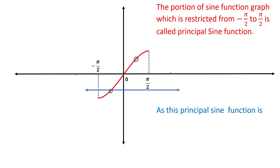So its inverse exists, because we know that the inverse of a bijective function exists. As this principal sine function is bijective, its inverse exists. This is the principal sine function which is bijective and whose inverse can be found.